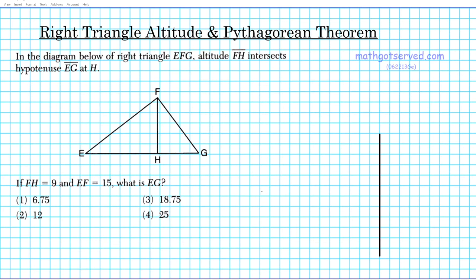Good day students, welcome to mathgotserved.com. In this clip we're going to be taking a look at an example on the use of the right triangle altitude theorem and also the Pythagorean theorem. The question reads: in the diagram below of right triangle EFG, altitude FH intersects hypotenuse EG at H. If FH equals nine and EF equals fifteen, what is the length of segment EG?